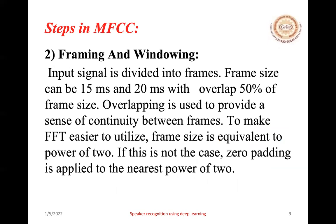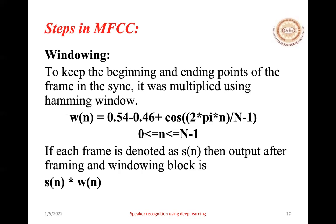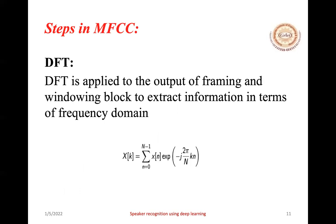In framing and windowing, the input signal is divided into frames. Frame size can be 15 to 20 milliseconds with an overlap of 50% of the frame size. If not, zero padding is applied to the nearest power of two. We apply a Hamming window function to each frame. When doing framing, some discontinuities appear at the ending points; the Hamming window function is used to remove these discontinuities and keep the ending points of the frame in sync. Then we apply the Discrete Fourier Transform to extract information in the frequency domain.